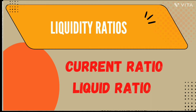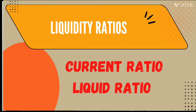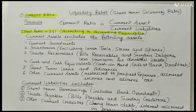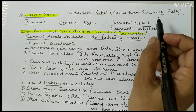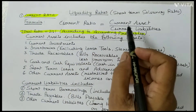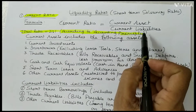Liquidity Ratios include: number 1 is Current Ratio, also known as Working Capital Ratio, and number 2 is Quick Ratio, also known as Acid Test Ratio or Liquid Ratio. The formula for Current Ratio is Current Assets divided by Current Liabilities.